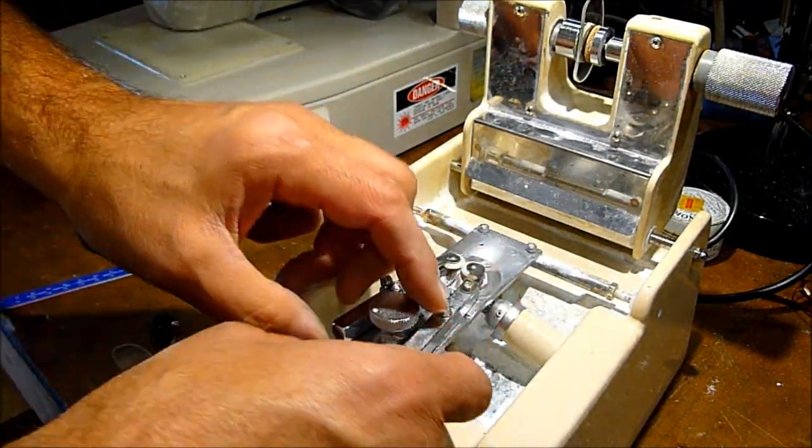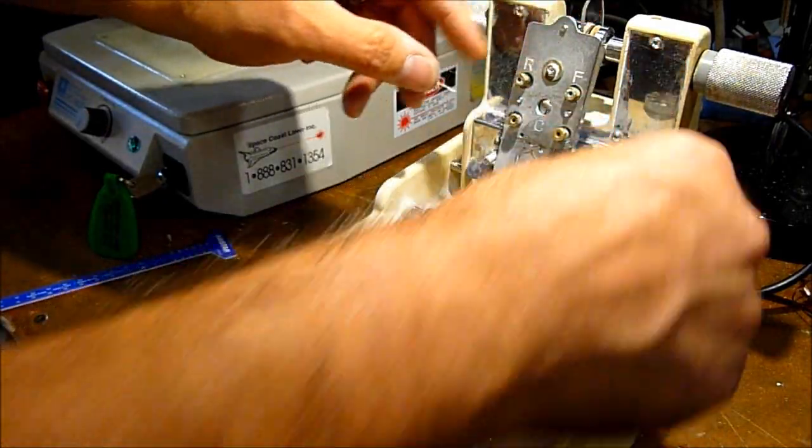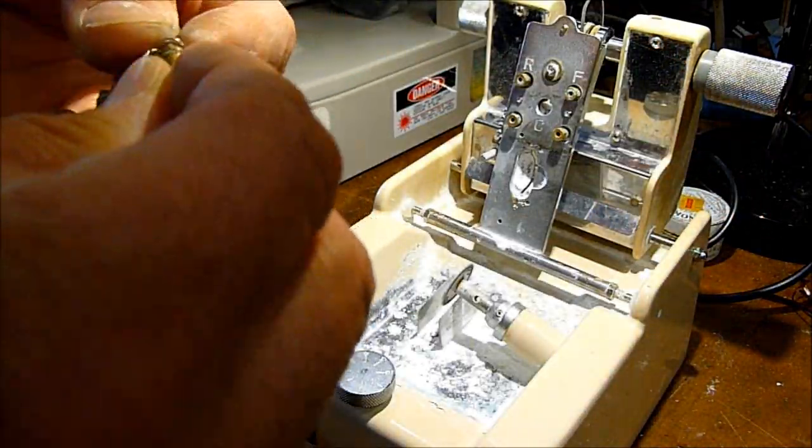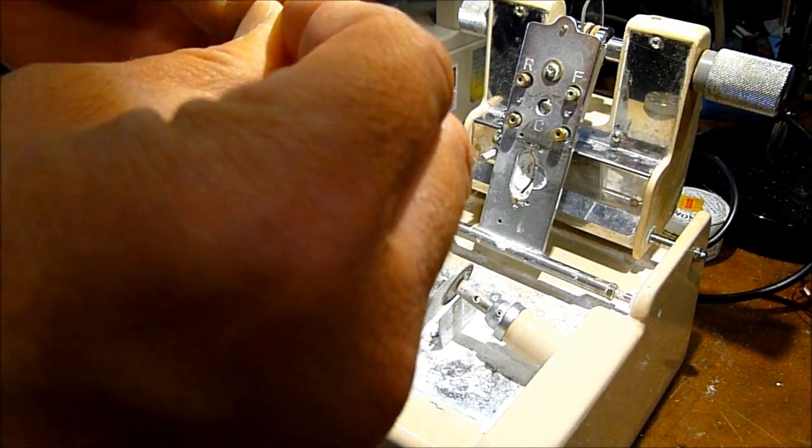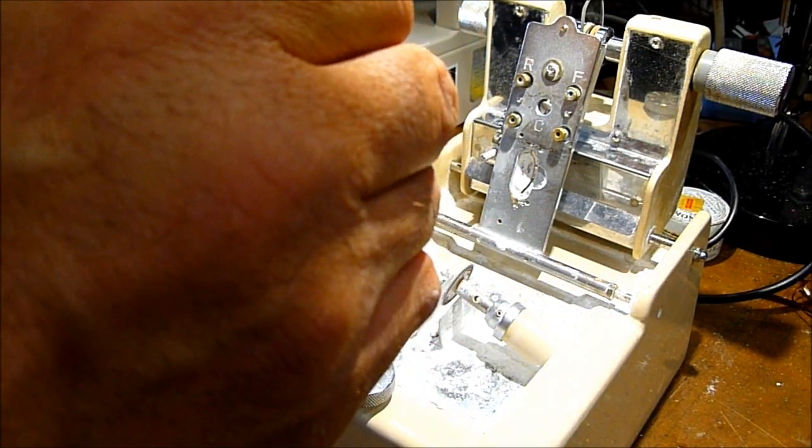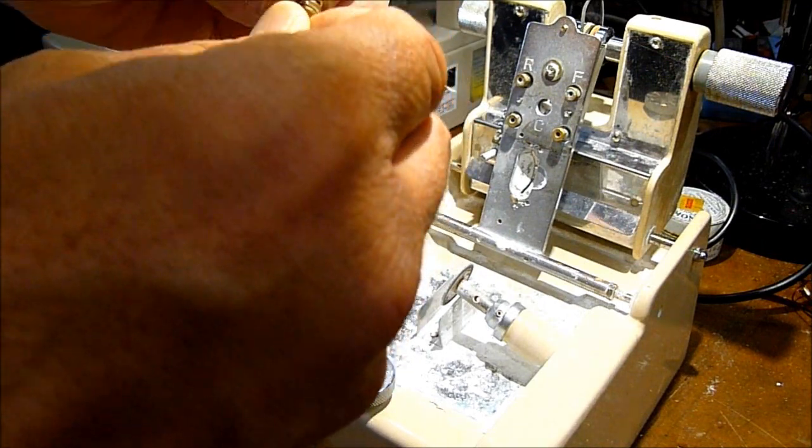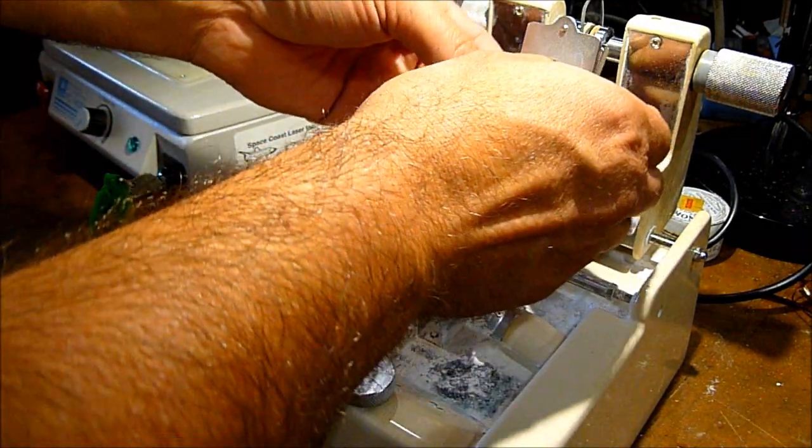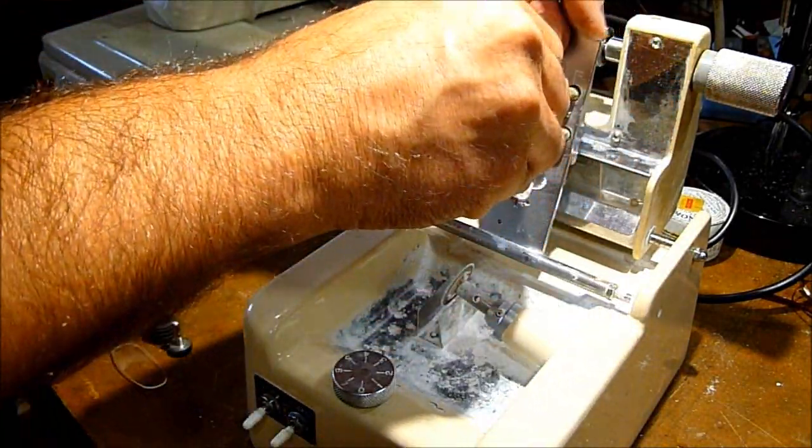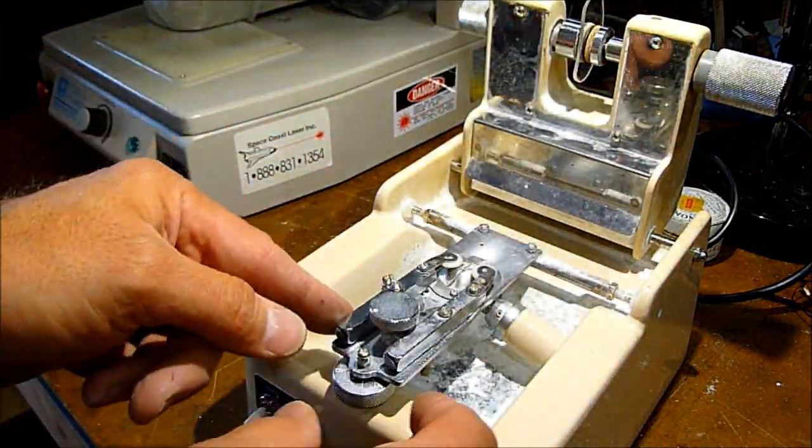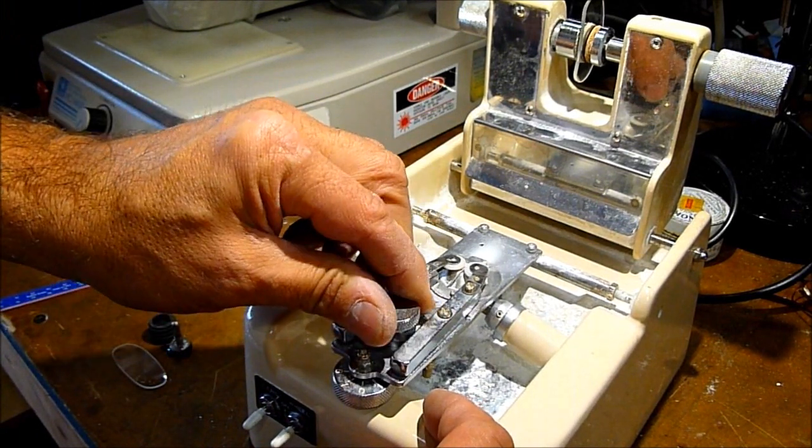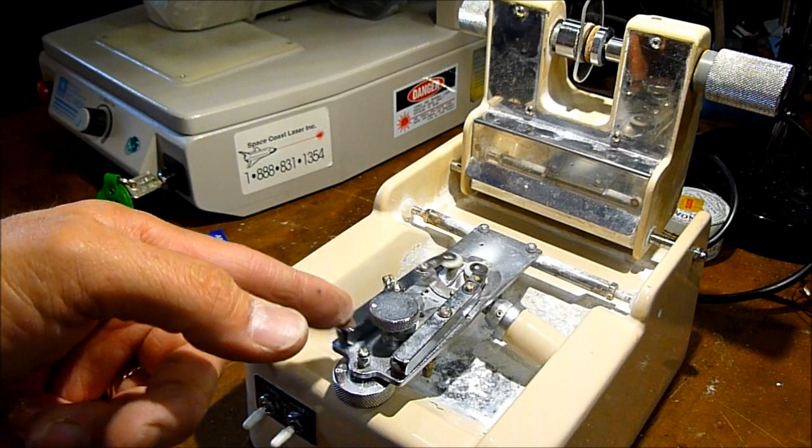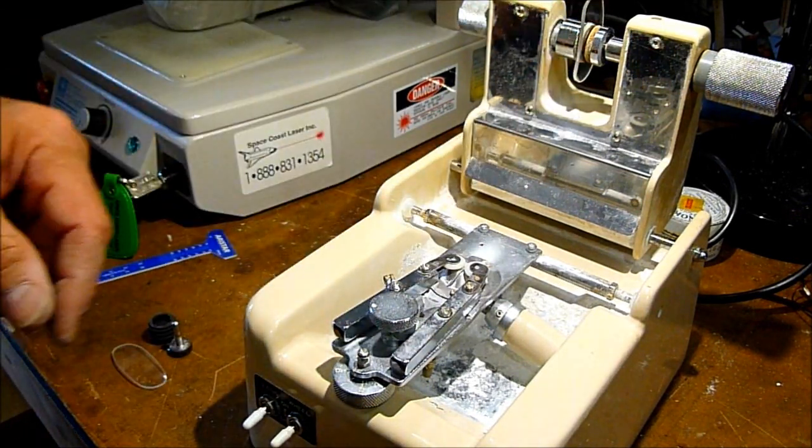So pull that out and switch us over to front surface. The spring came off my holder here, so I'll stick that in the front surface. And we'll adjust the front lens guide about there. This one's automatically at spring pressure. We've got the lens mounted.